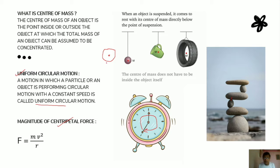If we consider a single revolution — from where this point starts to where it is complete — the distance traveled is going to be the circumference of that circle, which is 2πr, where r is the radius of that particular circle.